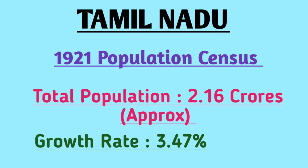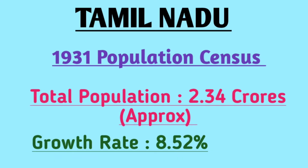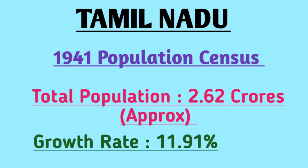In the 1921 official census, the total population of Tamil Nadu was 2.16 crores and the growth rate was 3.47 percent. In 1931, the total population of Tamil Nadu state was 2.34 crores, in which the growth rate was 8.52 percent from 1921 to 1931. In the 1941 official census, the total population of Tamil Nadu was 2.62 crores, with a growth rate of 11.91 percent.